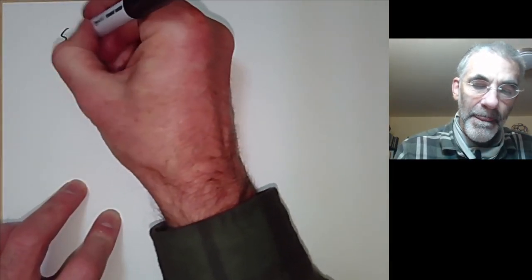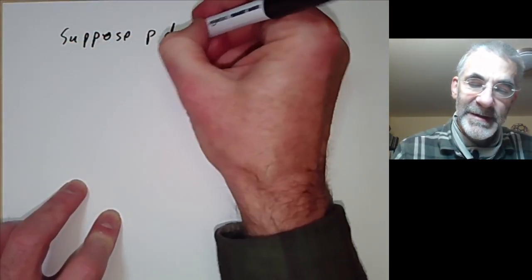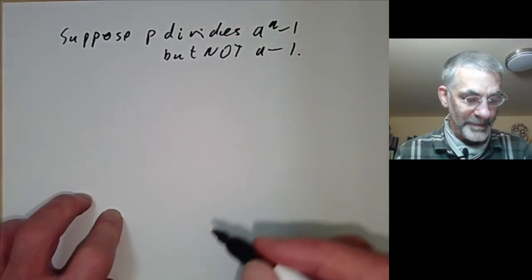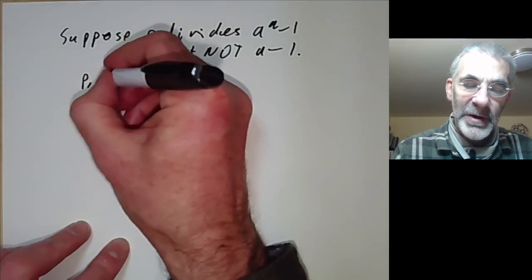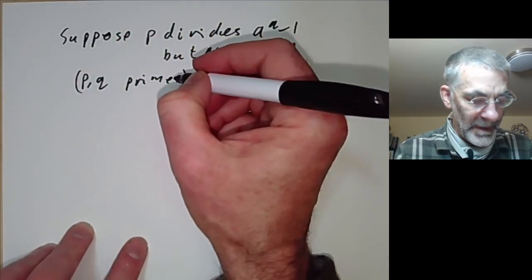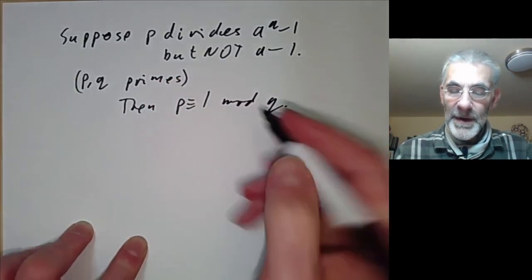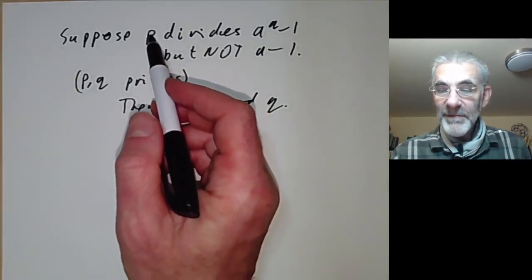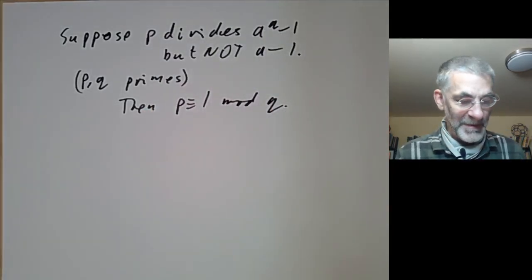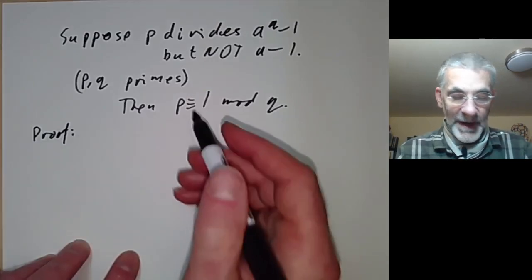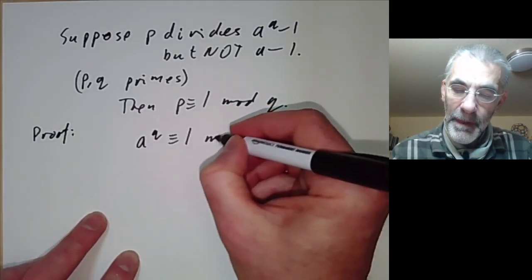Now we're going to have some applications for showing that certain numbers are or aren't prime. For this we need the following useful lemma: suppose p divides a to the q minus 1, but p does not divide a minus 1, where p and q are primes. Then p is congruent to 1 modulo q. This is very useful for finding primes dividing numbers of the form a to the q minus 1.